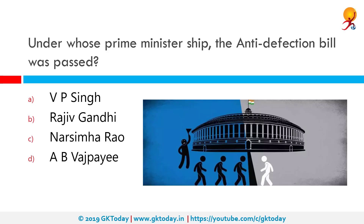Under whose prime ministership was the Anti-Defection Bill passed? This was passed under Rajiv Gandhi. The 10th Schedule of the Indian Constitution, also called the Anti-Defection Act, was amended in 1985 to prevent political defections and stop politicians from changing parties for the lure of office.